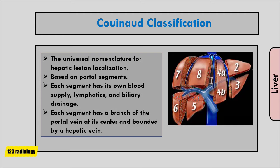Each segment has its own blood supply, lymphatics, and biliary drainage. Thus, the surgeon may resect a segment of a hepatic lobe, provided the vascular supply to the remaining lobe is left intact. Each segment has a branch or branches of the portal vein at its center, bounded by a hepatic vein.